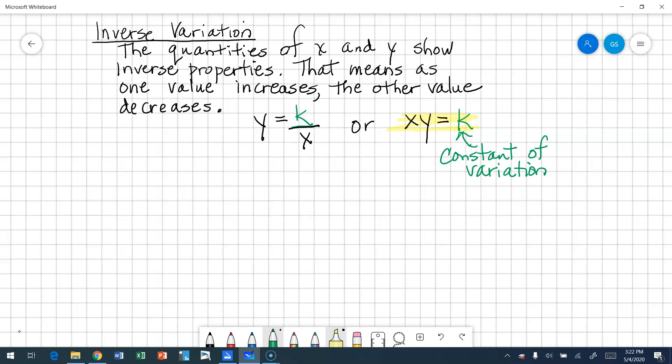k is still the constant of variation, so they're still equal to the same number. So think about this. If x were to increase in value, in order for k to stay the same, y would have to decrease in value.